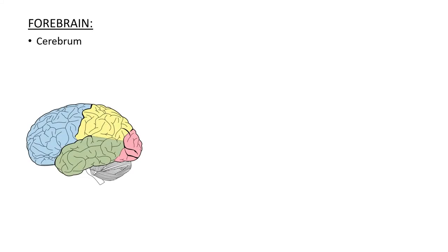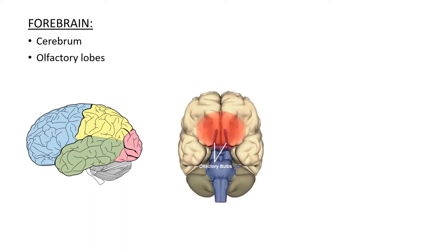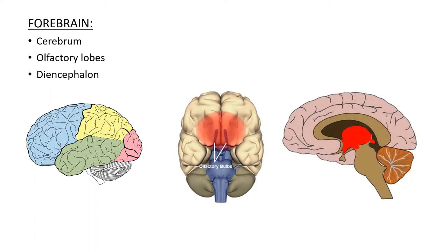Along with the cerebrum, forebrain also comprises of the olfactory lobes and the diencephalon.